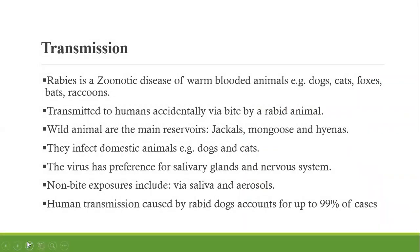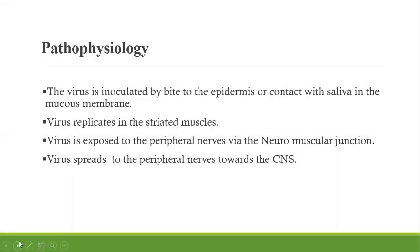In terms of transmission, as we said, it is a zoonotic disease so we mostly get it from animals. Wild animals that are reservoirs include jackals, mongoose, and hyenas, but it can also be passed on to domestic animals like dogs and cats. Transmission is mostly via bites, and for human transmission, dogs account for the highest number of cases. It can also spread if someone comes into contact with the saliva of a rabid animal.